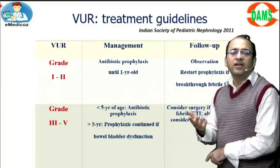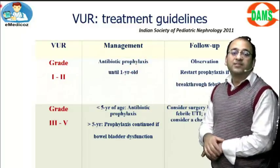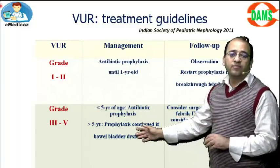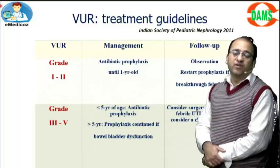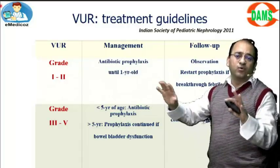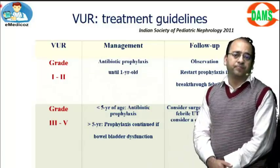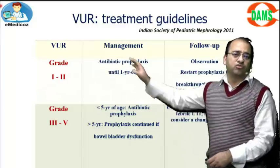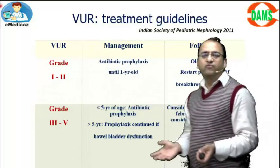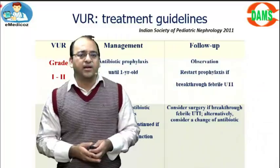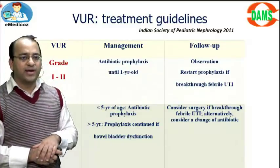Low-grade VUR at any age can resolve over time, so we give antibiotic prophylaxis. Surgery is only for older children with bilateral grade 4 or grade 5 VUR who have breakthrough UTIs or deterioration of kidney function. For a 6-month-old with bilateral grade 5 VUR, you wait — in less than one year, the VUR will resolve as the child grows.